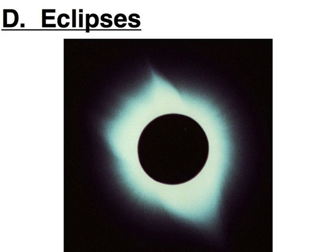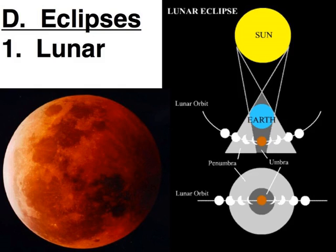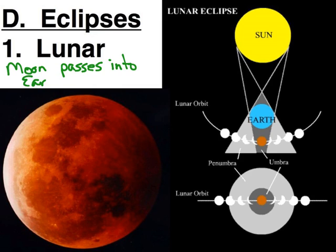Eclipses — as we talked about the moon orbiting the earth, we saw that there are times when the earth, the moon, and the Sun appear to be in alignment. When things are perfect is when we will get an eclipse. There are two types of eclipses. The first is called a lunar eclipse, and this is when the moon passes into Earth's shadow. Here on the diagram you can see the Sun shining on the earth.